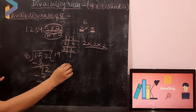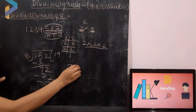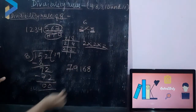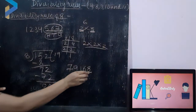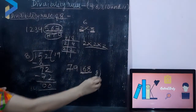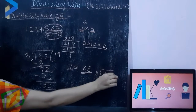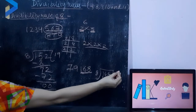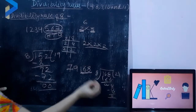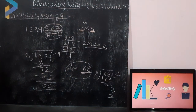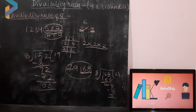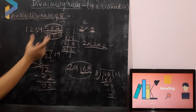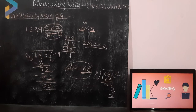Now one more example: 79168. We have to check the divisibility of the last 3 digits. So is 168 divisible by 8? 8 ones are 8, 8 twos are 16. So 168 is divisible by 8, which means the whole number 79168 is also divisible by 8. To test divisibility by 8, check the digits at 1's, 10's and 100's place — if the 3-digit number is divisible by 8, the whole number is divisible by 8.